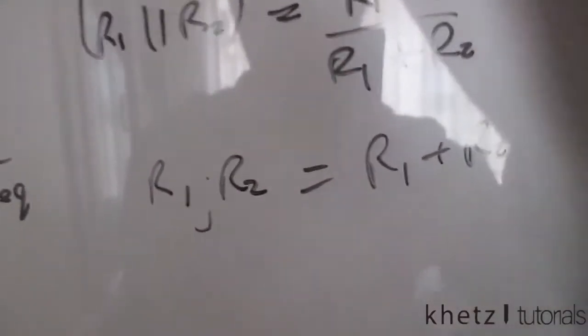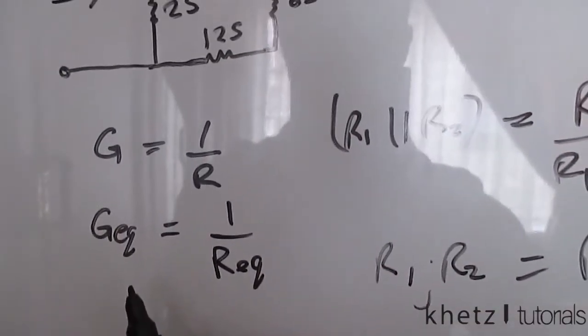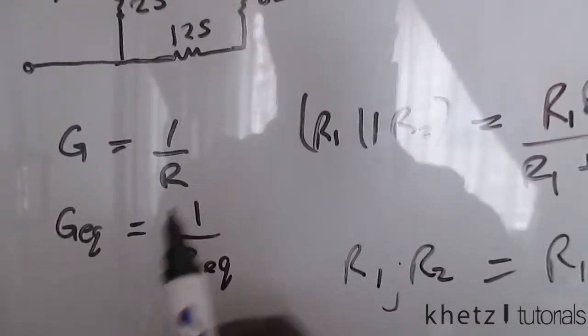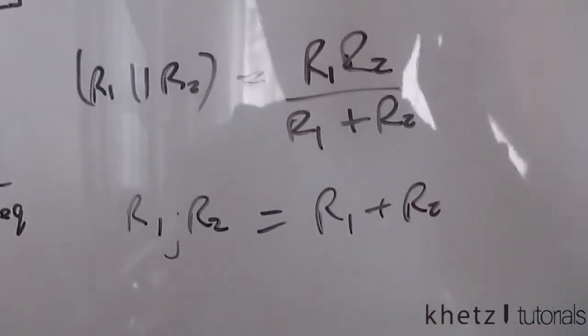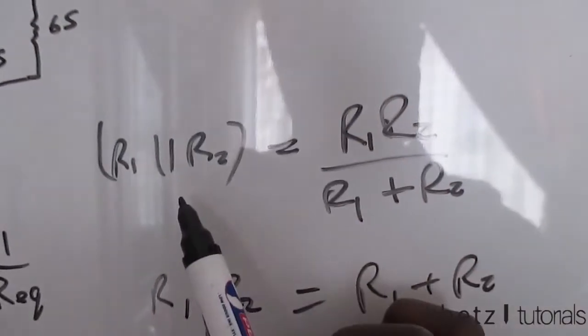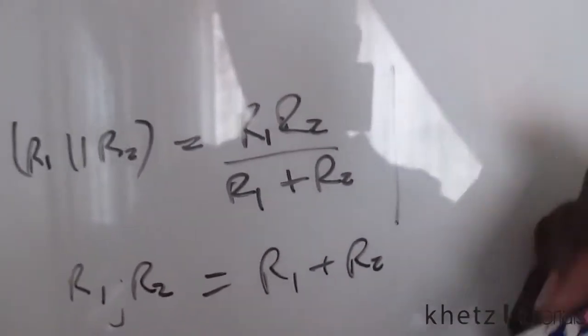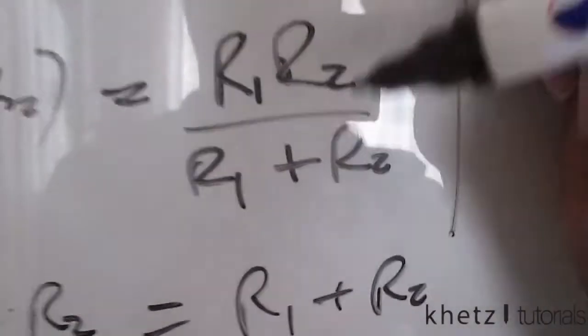But now that we have this relationship, which says conductance is a reciprocal of resistance, then this is swapped around for conductance. So in this case, we have parallel resistors, and this is how we calculate the equivalent. But for conductance, we apply this formula here.